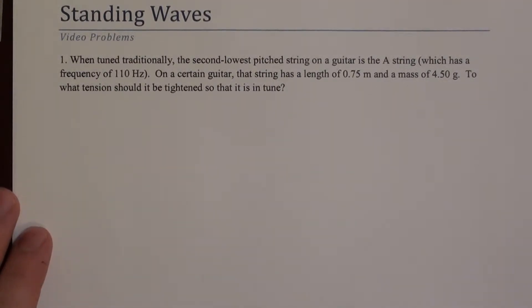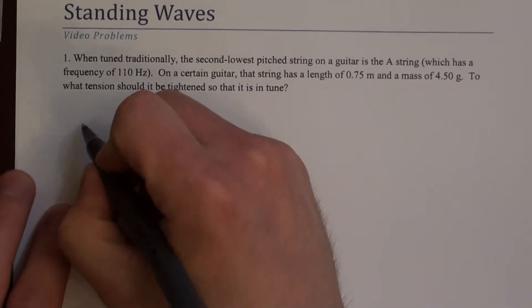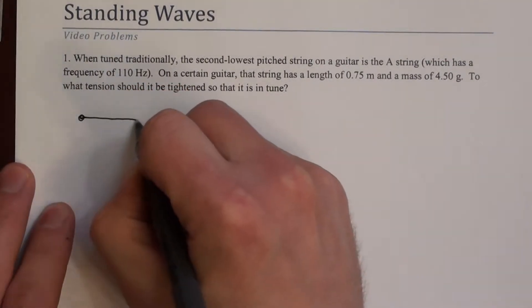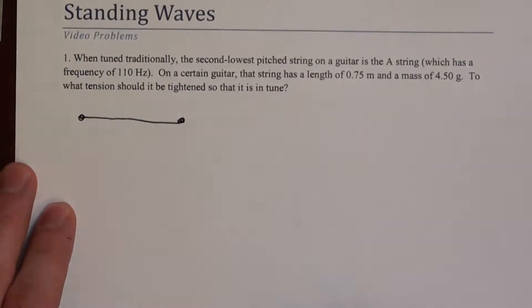So on a certain guitar, that string has a length of 0.75 meters and a mass of 4.5 grams. The question is what tension should be carried on that string in order for it to resonate at 110 Hz. So let's draw a guitar string.